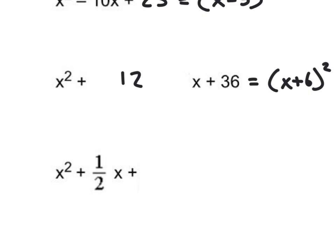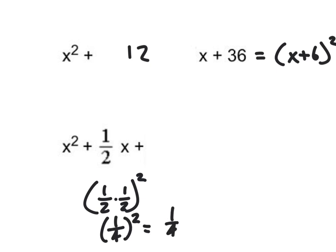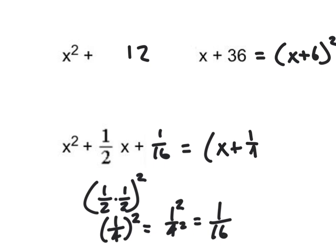For x squared plus one half x plus what: here's what I do to get that number. I take one half, multiply that by one half, and then square it. So I get one fourth quantity squared. When I take one fourth and square it, that's one squared over four squared, which gives me one over 16. So this number here would be one over 16. This factors to x plus one fourth quantity squared.